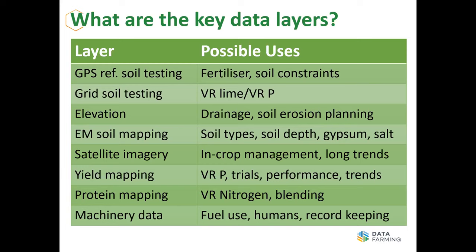A relatively new player to the Northern region is protein mapping. A lot of growers in the South have been using it — it's been worked on for nearly 25 years and we're finally seeing good quality products coming to market. You can't do variable rate nitrogen without protein mapping, because you multiply your yield by your protein by your crop factor to get your nitrogen removal. It's going to be an important tool going forward in the North, because nitrogen is our biggest input and cost, and often we can't do much in-crop management of nitrogen because the season doesn't allow it.